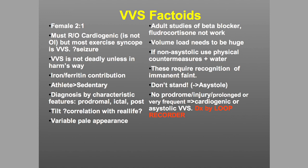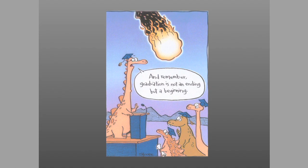Asystolic syncope is now not diagnosed by Holter monitor — it's diagnosed by a loop recorder. Externally at first, but in adults they now implant one called an internal loop recorder. The most common device is called a Reveal, made by Medtronic.